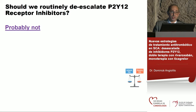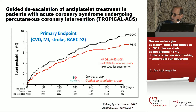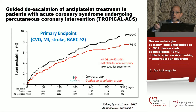The TOPIC study was the first to examine de-escalation: at one month, patients were switched from prasugrel to clopidogrel or remained on original treatment. There was a reduction in the primary endpoint largely driven by reduced bleeding complications — however, the study was largely underpowered and did not include myocardial infarction in the definition. The Italian SCOPE registry showed that patients who de-escalated — or 'downgraded' — early had an increase in ischemic events. Should we routinely de-escalate? Probably not — we must identify patients who benefit: those with major bleeding history, high bleeding risk, or low ischemic risk.